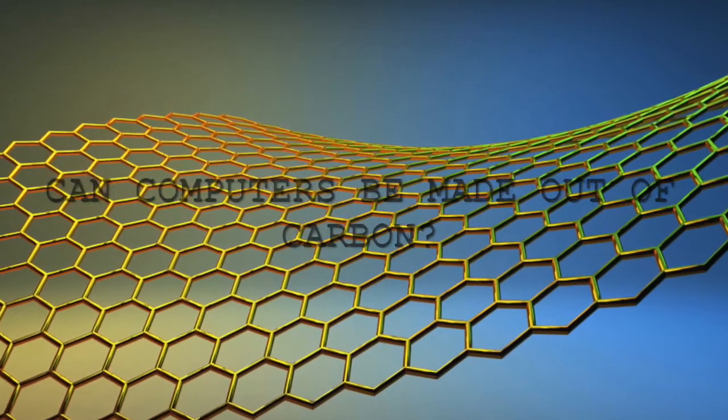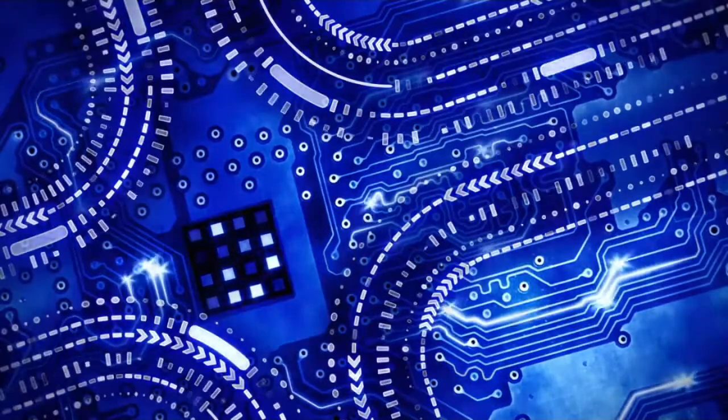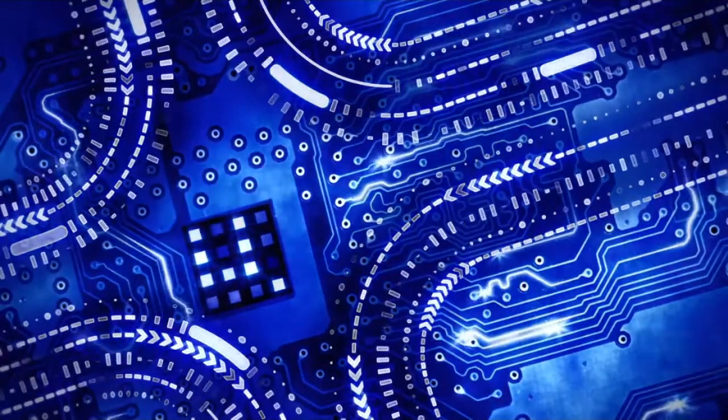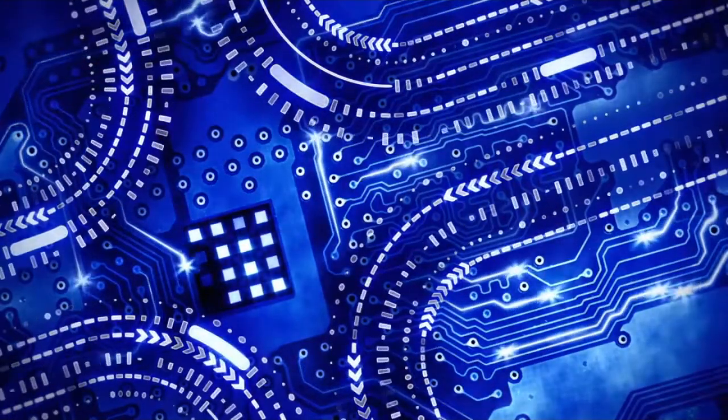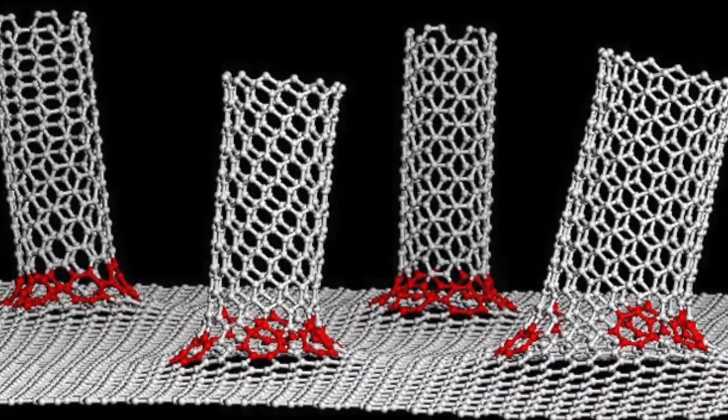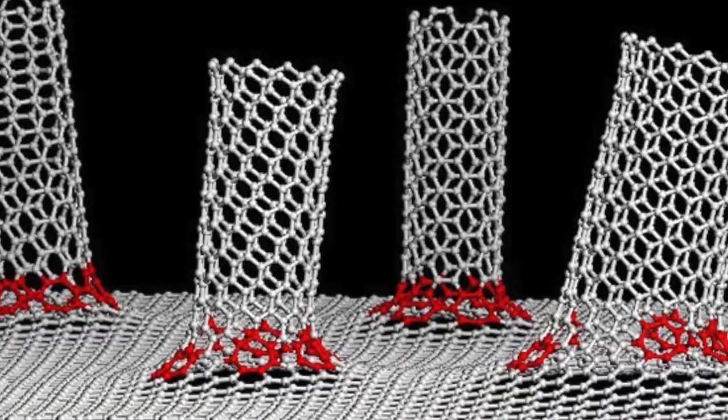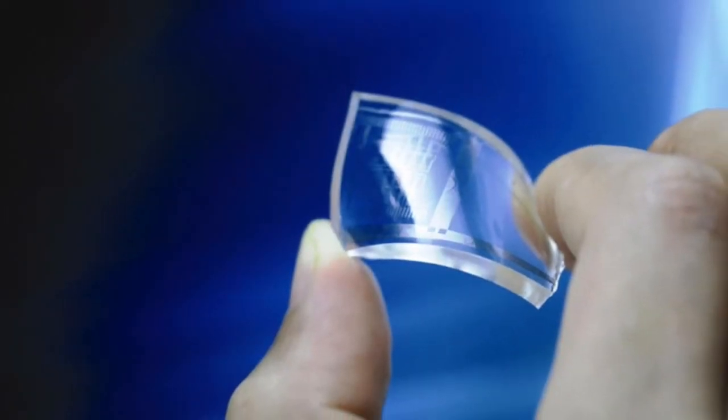Can computers be made out of carbon? Computer chips made out of graphene, a web of carbon atoms, could potentially be faster and more powerful than silicon-based ones. Carbon nanotubes promised applications ranging from high-strength carbon composites to tiny wires and electronic devices.